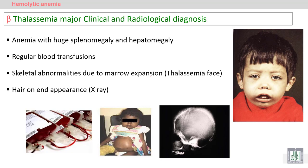Beta thalassemia major: clinical and radiological diagnosis. In beta thalassemia major, we have extraordinary hemolytic anemia, so we expect to have huge splenomegaly and also hepatomegaly — enlargement of the spleen and enlargement of the liver.